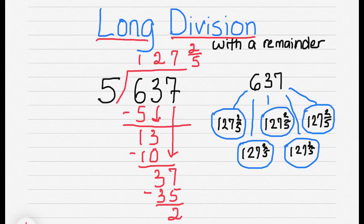Again, our total number quantity of 637 can be evenly divided into the 5 groups. And each group would have 127 and 2 fifths.